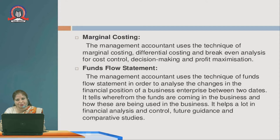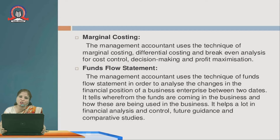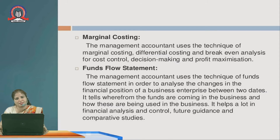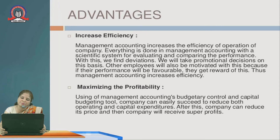Marginal costing — management accounting uses techniques of marginal costing, differential costing, and breakeven analysis for decision making and profit maximization. It also helps with cost control. Fund flow statement is used to analyze the financial position of the business, comparing the current scenario with past data. It tells us where funds are coming from and where they are being used, serving as a guide for the future.